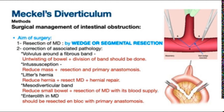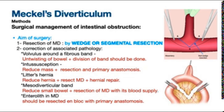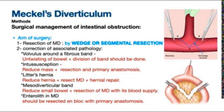Surgical intervention for bowel obstruction aims to resect the diverticulum by wedge or segmental resection, alongside correction of the associated pathology. For volvulus around a fibrous band: untwist the bowel and divide the band. For intussusception: reduce the mass and perform primary resection anastomosis. For herniation: reduce the hernia, resect the diverticulum, then repair the hernia. For a mesodiverticular band: free the entrapped bowel and resect the diverticulum with its blood supply. For enterolith: resect the diverticulum en bloc with primary anastomosis.